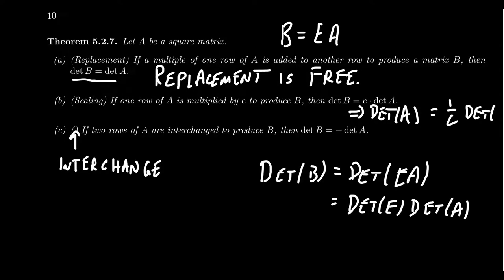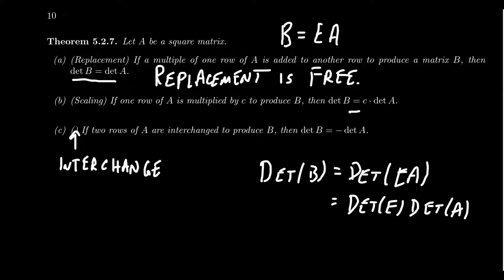This is kind of like when we factored elementary matrices in the past — whatever the row operation you did, the inverse is the one that shows up in the factorization. So you have to take reciprocals. I will show you a trick using the multilinearity of the determinant in the forthcoming examples. If I scale by two, do I multiply the determinant by two or one half? There's an easy trick, and I'll show you how that works.